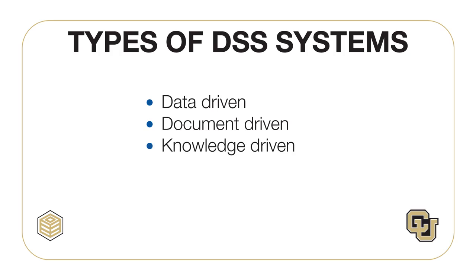A knowledge-driven DSS focuses on knowledge and expertise. It recommends a course of action by incorporating experience and judgment to support automated decision-making. Artificial neural networks and knowledge-based expert systems fall into this category. A model-driven DSS uses optimization or simulation models to optimize one or more objectives. Microsoft Excel, for example, is a tool commonly used to develop model-driven DSS. These systems may include statistical packages, simulation models, and many financial and management science models.